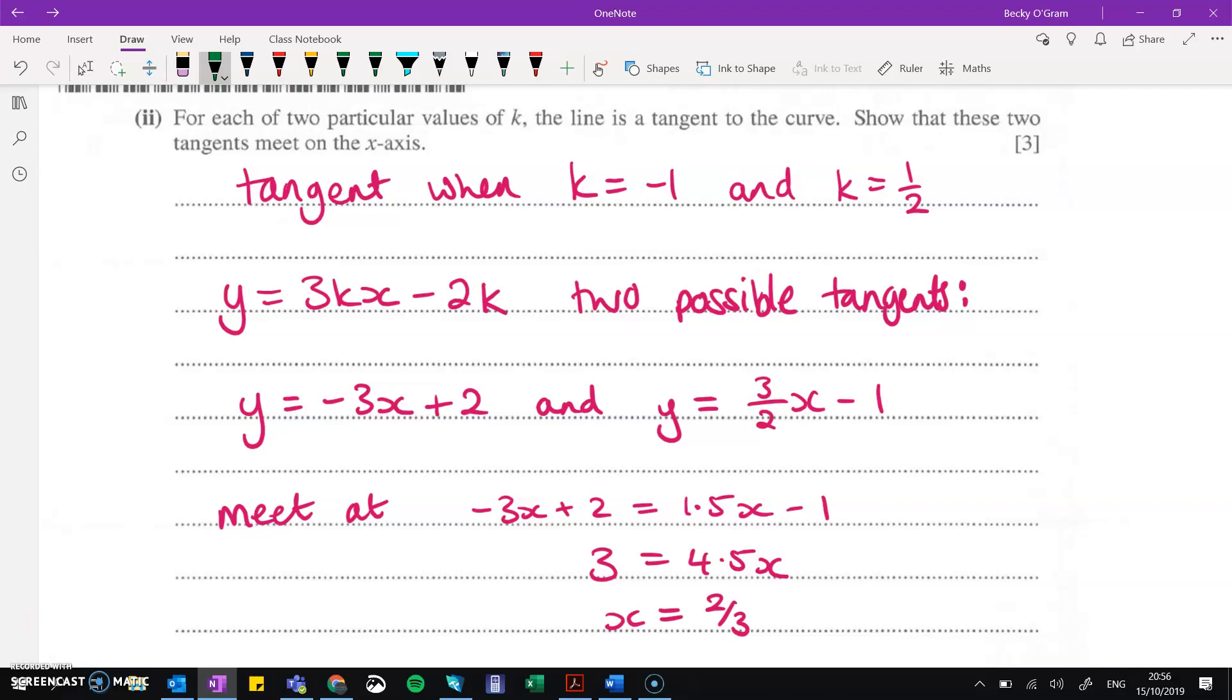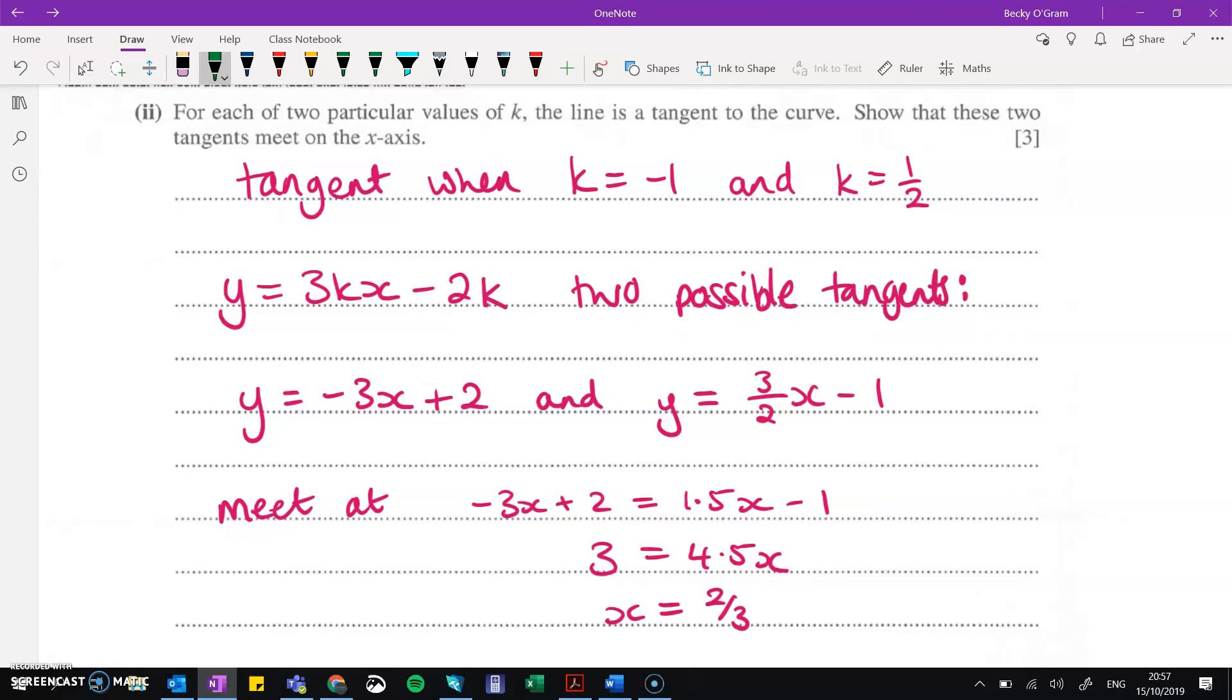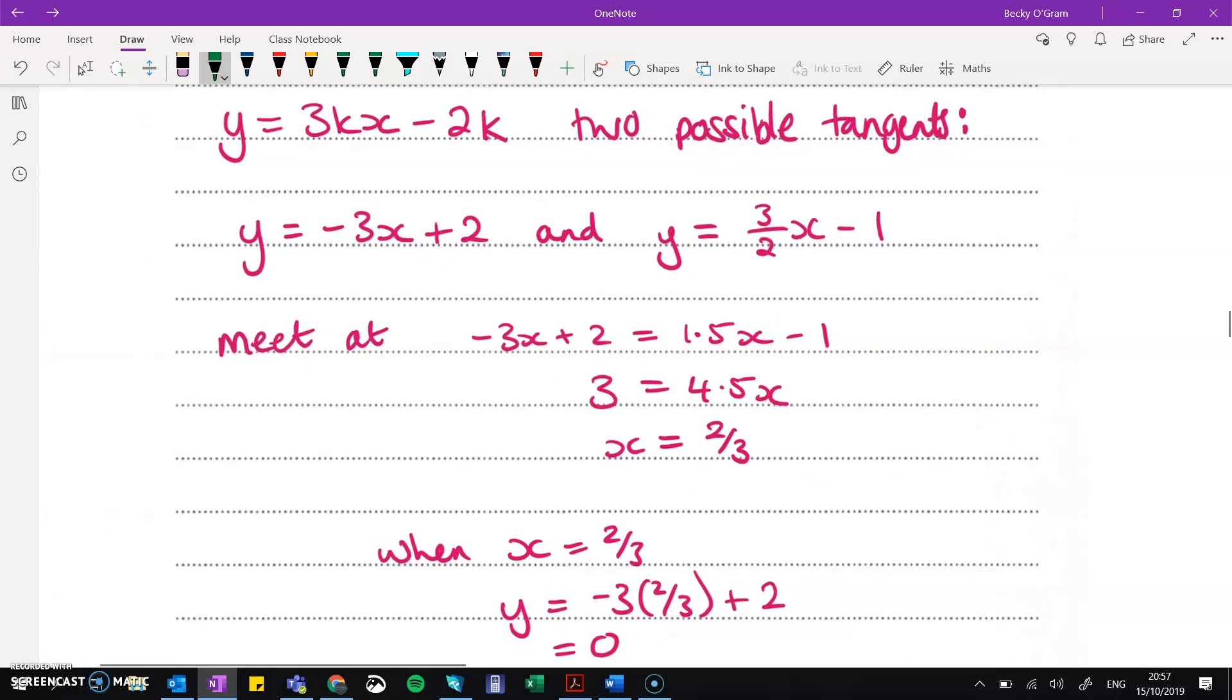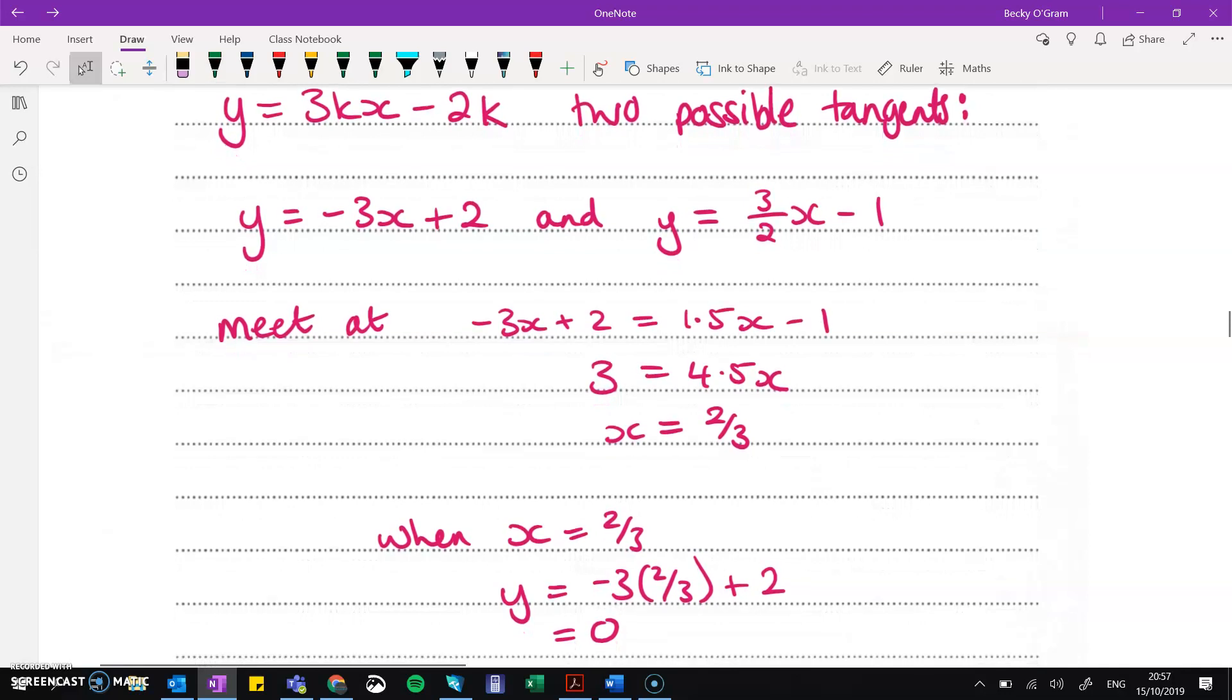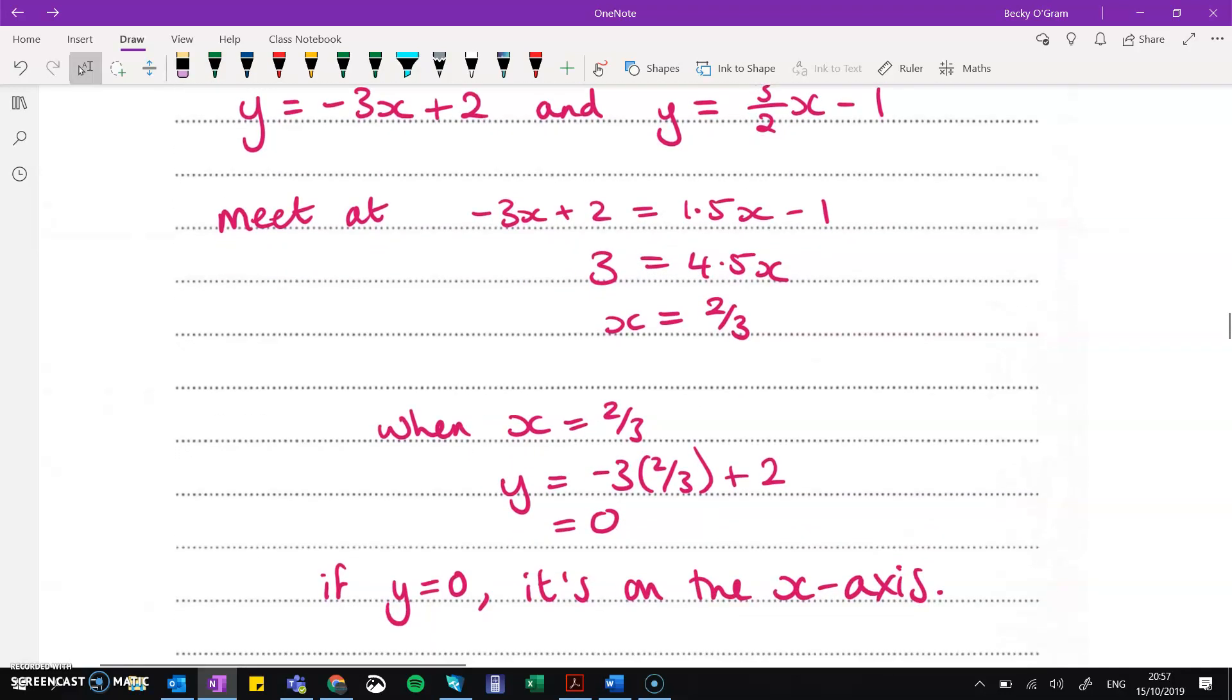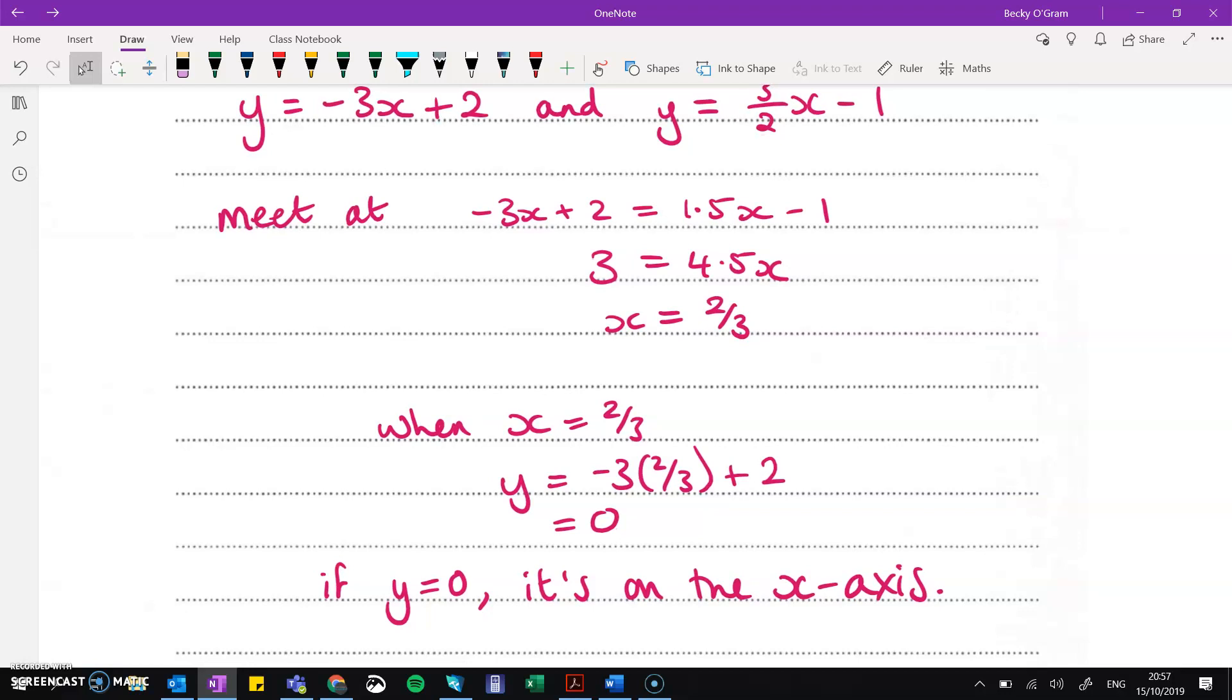Then we move on with that for the next part. And we've got for two particular values of k, the line is a tangent. Now tangents happen when the discriminant is exactly equal to zero. Now we just worked out those values will happen at -1 and 1/2. So if we are looking for a tangent to the curve, we've got two possible k's, which means there are two possible tangents. And we want to know where those two tangents cross. So set those two values of k to get our two tangent lines. We want to know where they cross. So these will meet when those two y's are equal to each other, which means it's when x is 2/3. Now when x is 2/3, we can put that back into one of the equations and show that y equals zero. If y is zero, that means it's on the x-axis as was required.